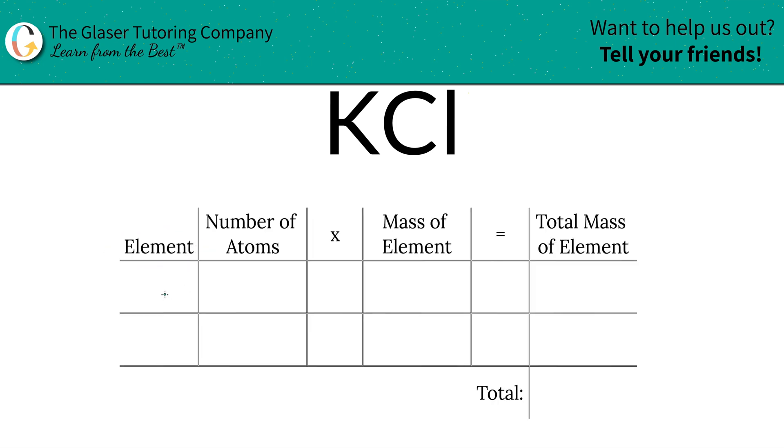So the first thing I'm going to do is write the elements down that I see in the compound. So we see potassium K and we see chlorine Cl. Next is to identify the number of atoms and that's where the subscripts come into play. Now if you don't see a subscript at the bottom of that element, there is an assumed one down there. So there's one potassium and also one chlorine.